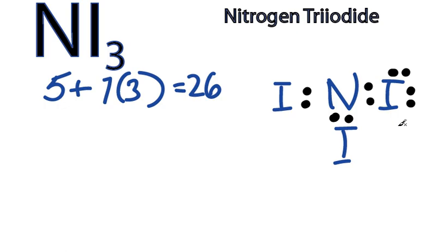So we have 6, 8, 10, 12, 14, 16, 18, 20, 22, 24. And then the last two we'll put here on the Nitrogen, 26.